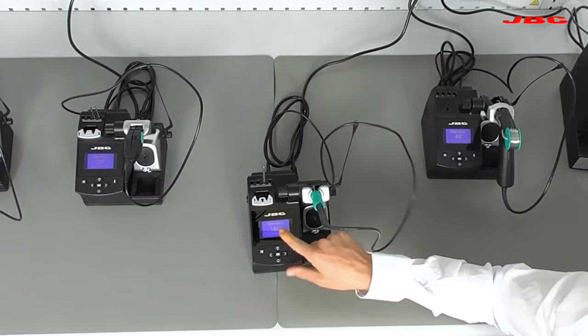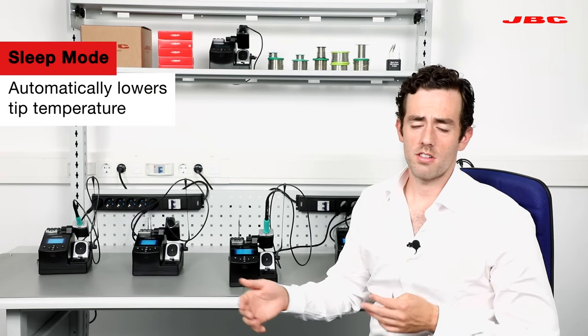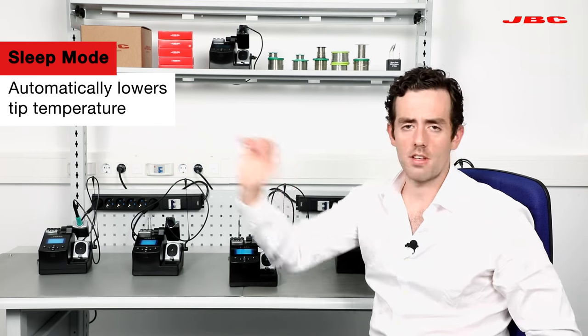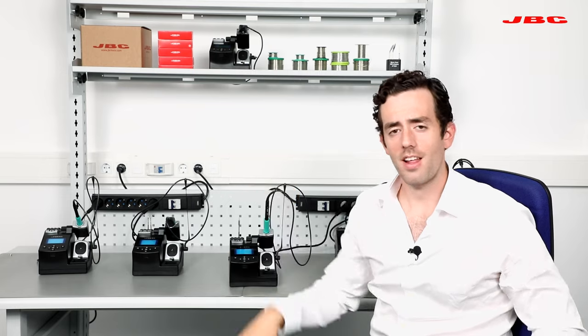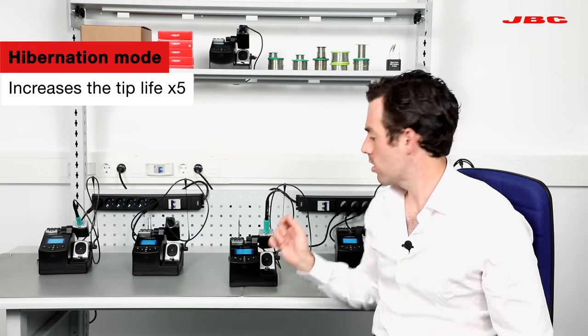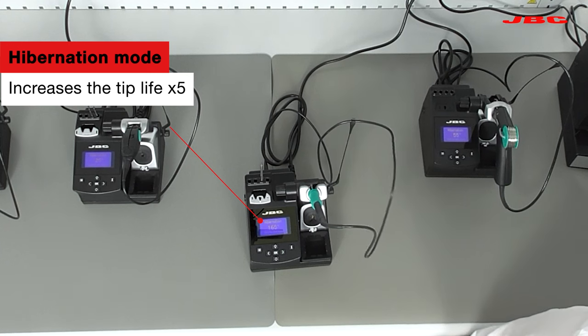As JBC has the sleep mode, as other companies, what it means is that you put it back on the cradle and the moment you put it back, it goes to a certain temperature. Hibernation mode means that the moment you put back the handle in the cradle, it goes to room temperature.